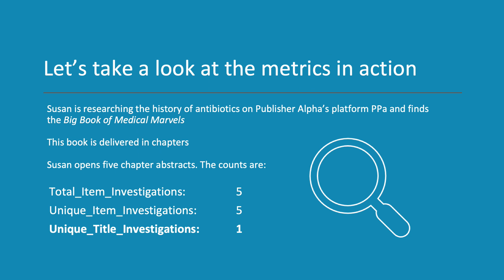Susan is researching the history of antibiotics on Publisher Alpha's platform, PPA, and finds The Big Book of Medical Marvels. This book is delivered in chapters. Susan opens five chapter abstracts. The counts will then be Total Item Investigations 5, Unique Item Investigations 5, and Unique Title Investigations 1. Because all five chapters are from the same book, the Unique Title Investigations count will only be one.